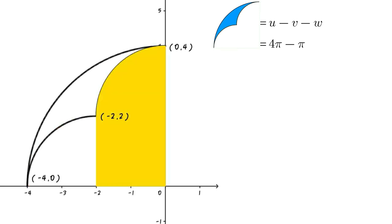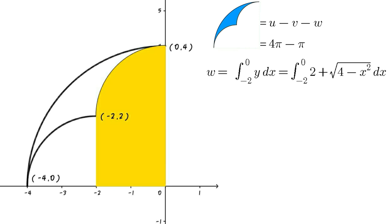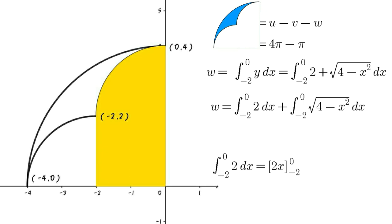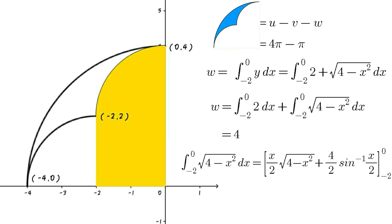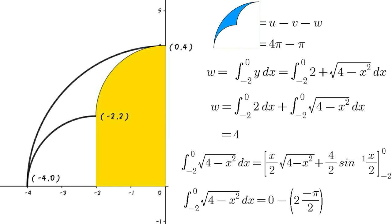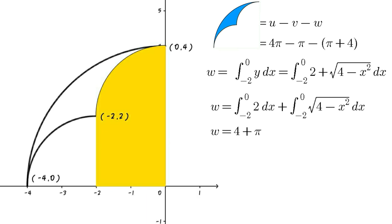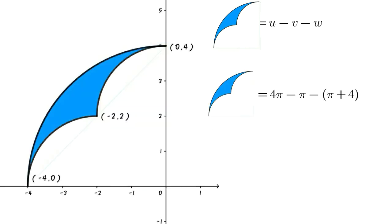The third curve is a quarter circle centered at (0, 2) passing through (−2, 2) and (0, 4). Its equation is x² + (y − 2)² = 4, so y = 2 + √(4 − x²). Then W = ∫(−2 to 0) [2 + √(4 − x²)] dx = ∫(−2 to 0) 2 dx + ∫(−2 to 0) √(4 − x²) dx = 4 + π = π + 4. Therefore, area of blue region equals 4π − π − (π + 4) = 2π − 4 cm².